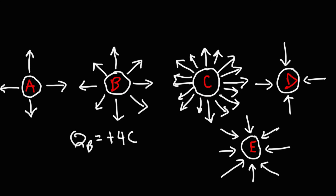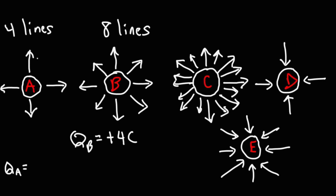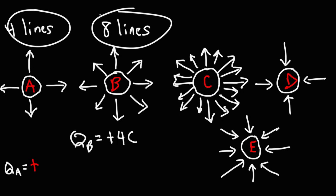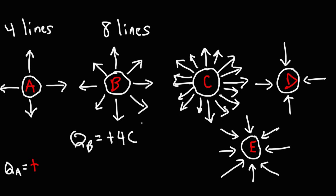Charge B has a magnitude of 4 coulombs and a total of 8 electric field lines. Charge A only has 4 electric field lines, which is half of 8, so QA is going to be half the value of QB. Also, the electric field lines are directed away from charge A, so it's a positive charge. Therefore QA = positive 2 coulombs.